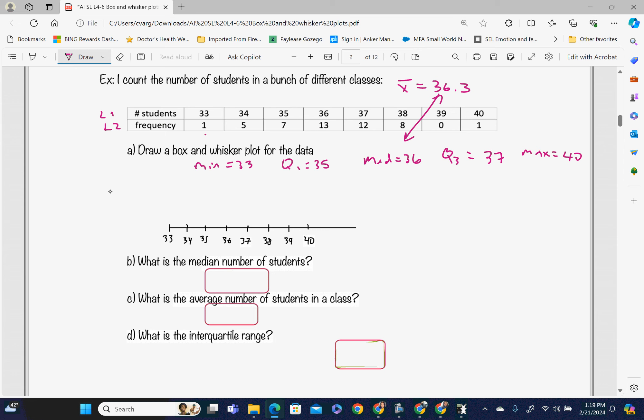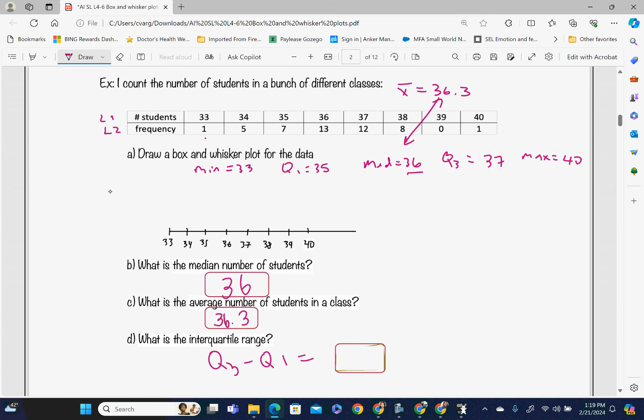Now we can answer our questions. What is our median? Our median is 36 students. What is our average number? That's the same thing as our mean, so this is 36.3. I rounded it to three significant figures. Interquartile range is Q3 minus Q1. That is 37 minus 35, which equals 2. Just by doing the five number summary, it's worth plugging those numbers in because now...